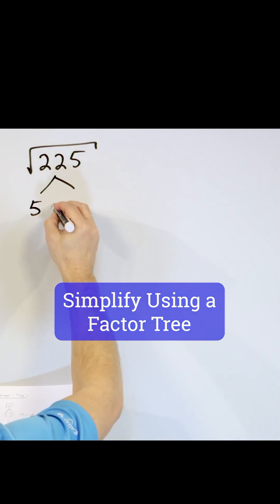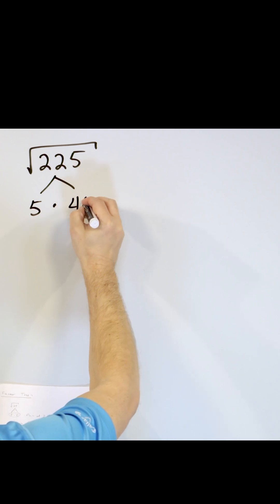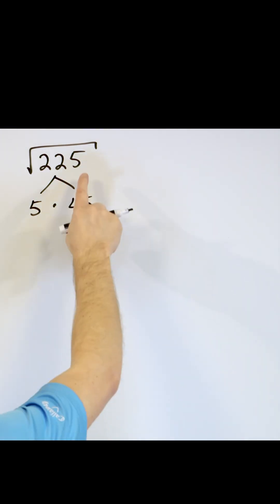So I get a calculator out, and I figure out that five times 45 is equal to 225. How do I know that? Because I grab a calculator, I take 225, I divide it by five, and I get 45. So I know that these have to multiply to give me this.